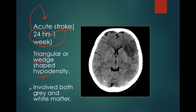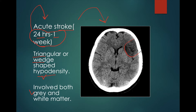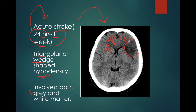The next criterion is that it should involve both gray and white matter. For example, in this case we can see that there is hypodensity noted in the left frontal and temporal lobe. This hypodensity is wedge-shaped and is also involving both gray and white matter. This is the white matter of the right cerebral hemisphere. Similarly, in the left cerebral hemisphere, this is the white matter and the part outside is the gray matter. So this hypodensity has involved both gray and white matter, and this is a case of acute stroke.